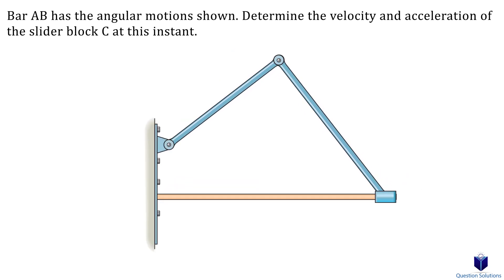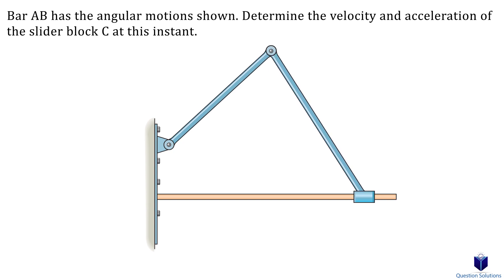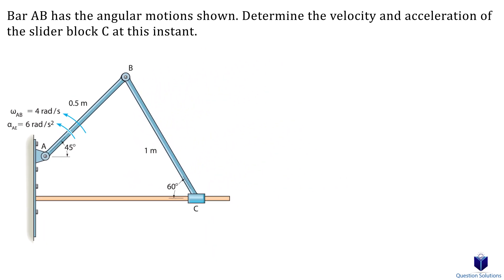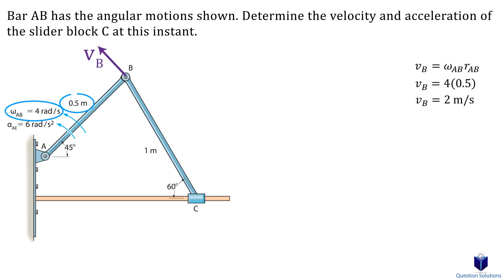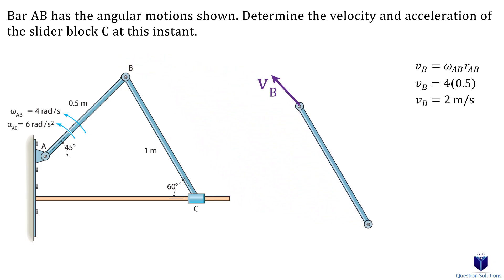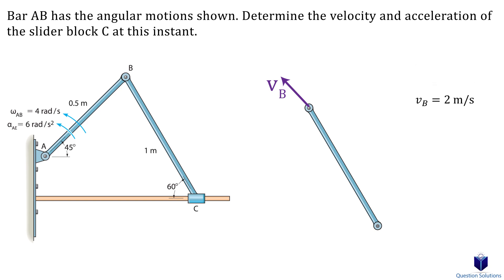Let's get started with this example where we need to find the velocity and acceleration of slider block C. First we'll focus on getting the velocity, then the acceleration. We can figure out the velocity at point B for link AB by multiplying the angular velocity by the distance from A to B. Let's draw a free body diagram of link BC along with the velocity vector, which is perpendicular to link AB. We can also draw the velocity vector from point C, which will be along the x-axis since the slider is fixed onto a bar. We need to find the instantaneous center of zero velocity.